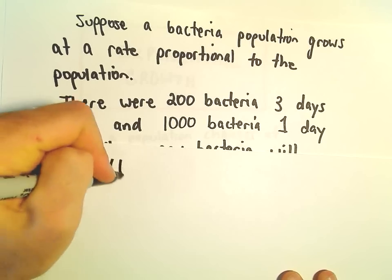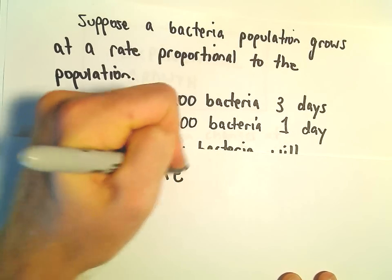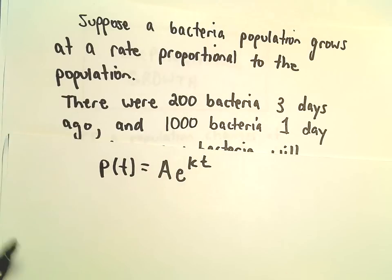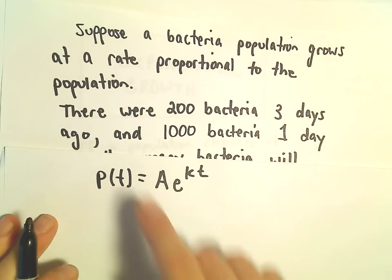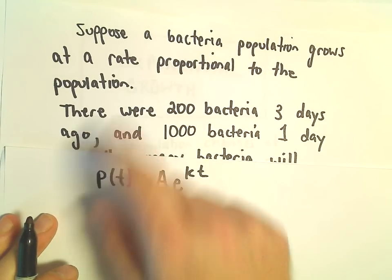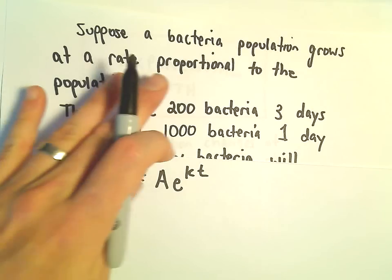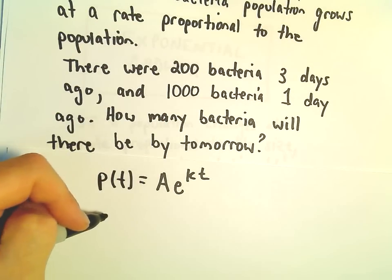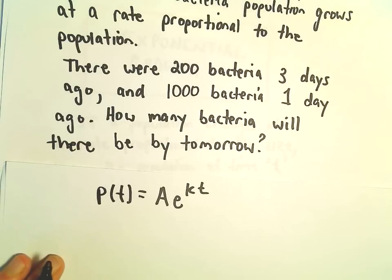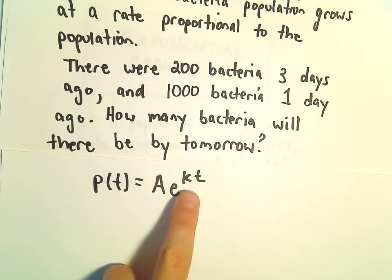We know the population P of T can be described by A times E to the KT. We can say this because the population grows at a rate proportional to the population. We don't know the initial amount, and we don't really know K, the growth rate.